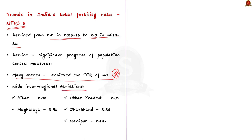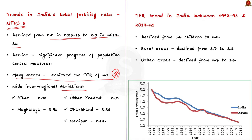There are five states which have still not achieved a replacement level fertility of 2.1. These five states are Bihar, Meghalaya, Uttar Pradesh, Jharkhand, and Manipur.